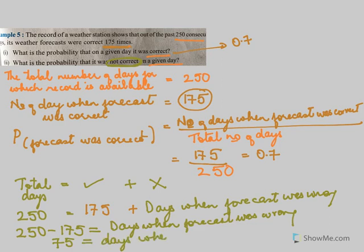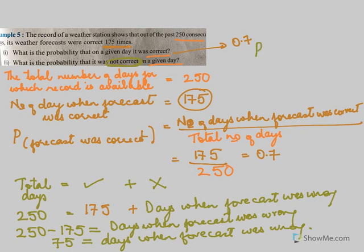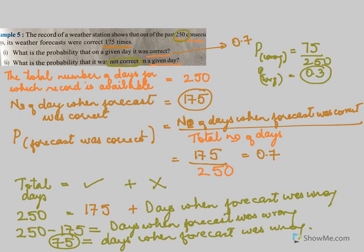There were 75 days when the forecast was not right or wrong. The probability of it not being right: the forecast was wrong for 75 days, so 75 over 250, and that answer is 0.3. This is the probability when the forecast was wrong. Notice that 0.3 plus 0.7 equals 1 — the total probability comes to 1.